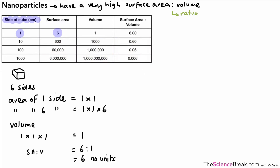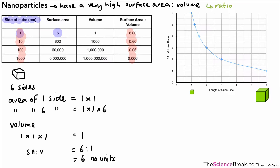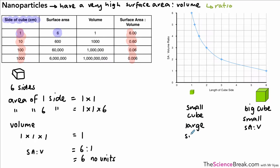Looking at a table of values going up by a factor of 10 in cube size, we can see the surface area to volume ratio reduces by a factor of 10 each time. On a graph with cube side length on the x-axis and SA:V ratio on the y-axis, a large cube has a small SA:V ratio and a smaller cube has a large SA:V ratio. The relationship is not linear — it's a curve.